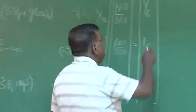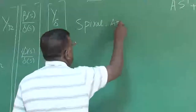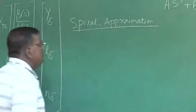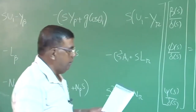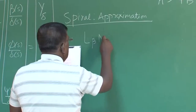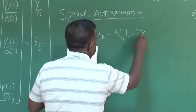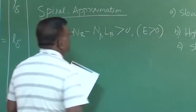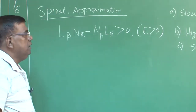We will now simplify this for spiral, roll, and dutch roll modes. These are approximations — mostly not very good approximations — but still they have some relevance to designers in an approximate manner. First, we will do the spiral approximation. Before going there, please remember: we found the condition L_β·N_r − N_β·L_r > 0. This came from the condition e > 0: if e is greater than 0, the aircraft will not suffer from spiral mode divergence.